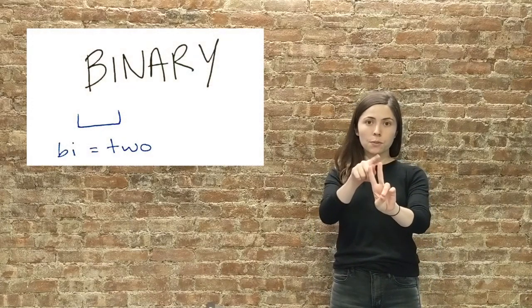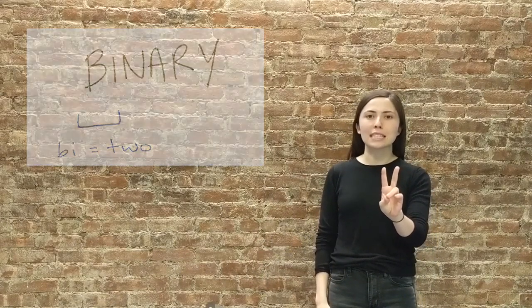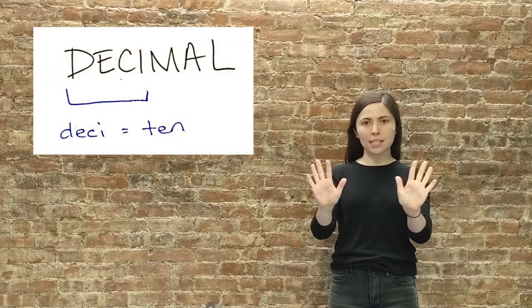The number system comprised of just zeros and ones is called binary because it's two-based as opposed to the human-friendly decimal number system which is ten-based. Computers use binary because it's easy to interpret whether or not a switch is on or off. If computers used a number system like decimal, for example, they would have to map individual voltages to the different digits. That would be harder to read.